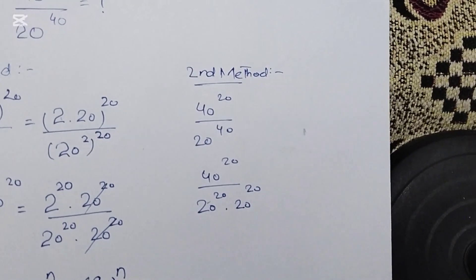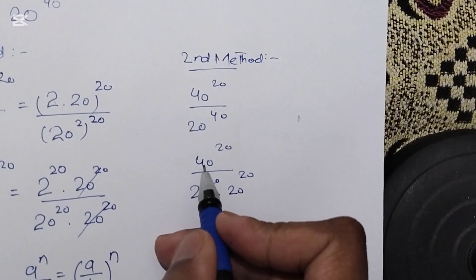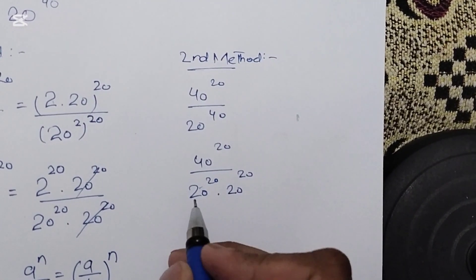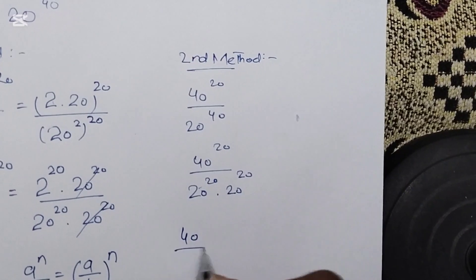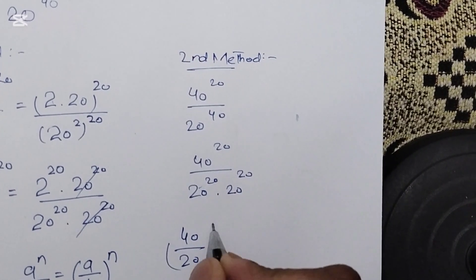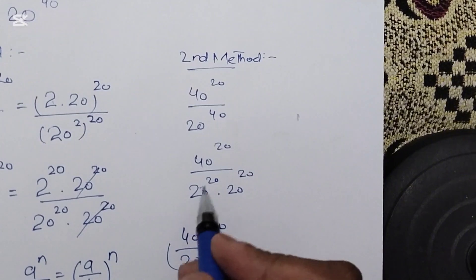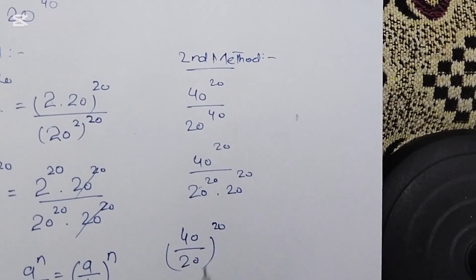So here we will use another formula, that is (40^20 over 20^20) whole power 20. This formula: a^n over b^n can be turned into (a by b) whole power n.